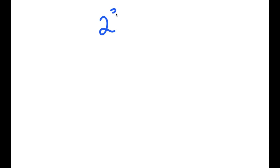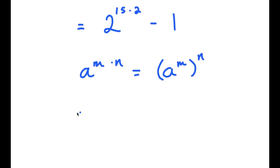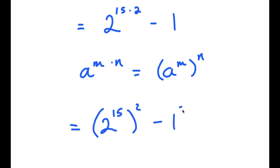In this video, I'm going to solve the problem 2 to the power of 30 minus 1. To solve this, I'm going to rewrite this as 2 to the power of 15 times 2 minus 1. If I have something in the form a to the power of m times n, this is equal to a to the power of m to the power of n. So 2 to the power of 15 times 2 is the same thing as 2 to the power of 15 to the power of 2. And negative 1 is the same thing as negative 1 squared.